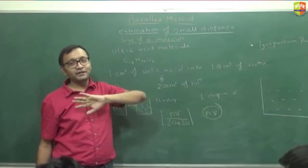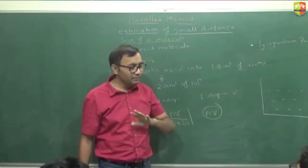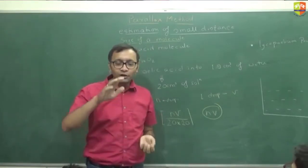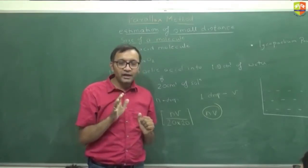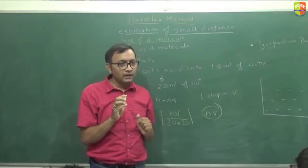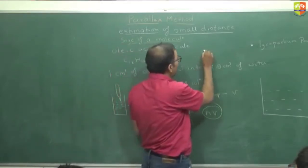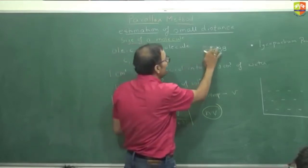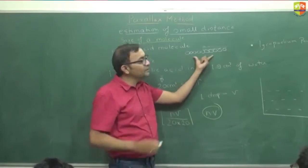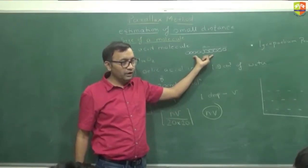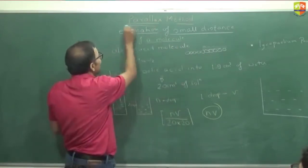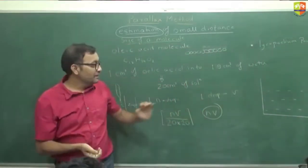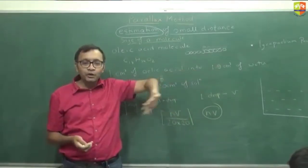The key assumption is that the surface is large enough that the oleic acid spreads as a unimolecular layer — one molecule thick. You keep spreading until it stops spreading. When spreading stops, there is one molecule here and one molecule there. If a molecule can still move adjacent to another, it spreads further; once no more spreading is possible, you have a monomolecular layer. That is why this is called an estimation, not an exact calculation.